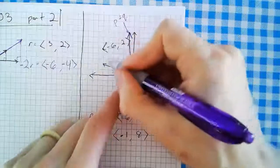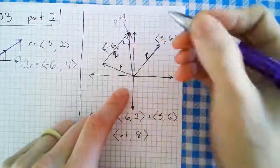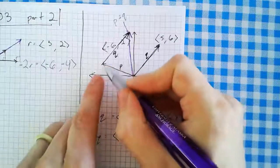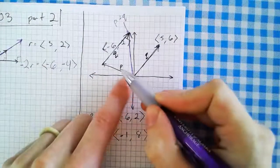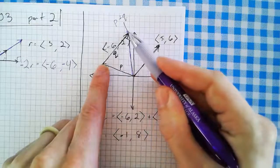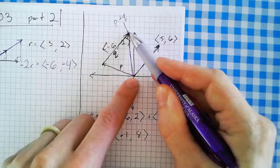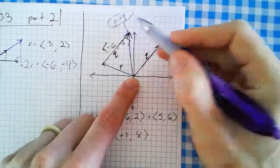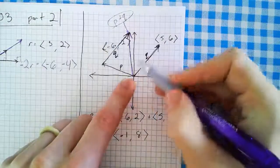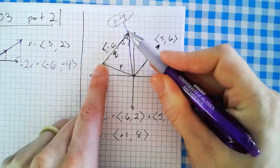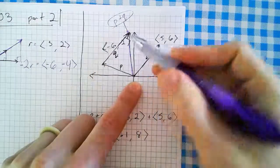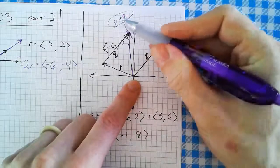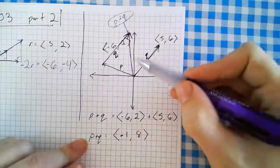If I take q and move it over so the tail end of q starts at the tip of p — it's the same vector, just shifted. So if you followed vector p and then followed vector q after that, you'd end up at the same ending point as if you started from the origin and followed the vector p plus q. Adding two vectors together is like doing the vectors one after the other.